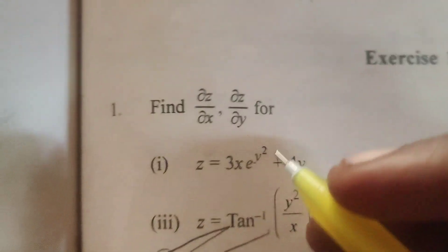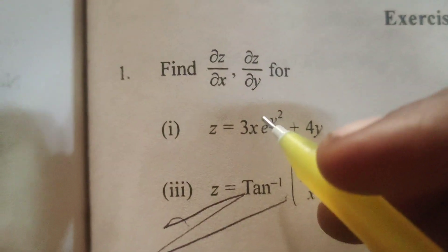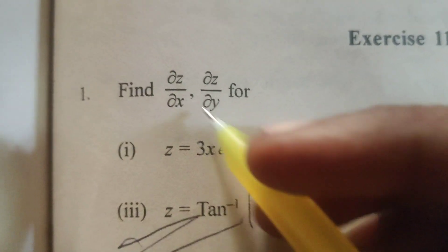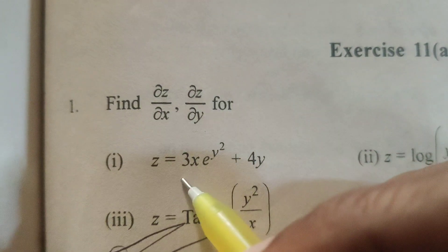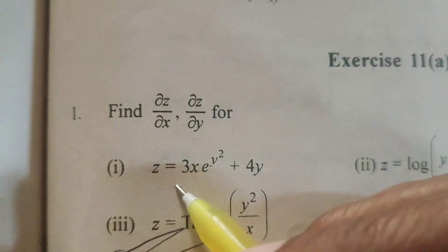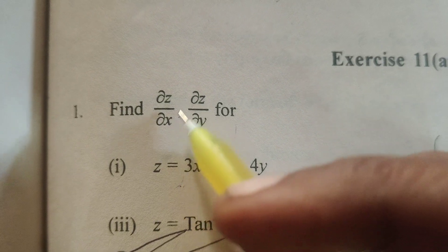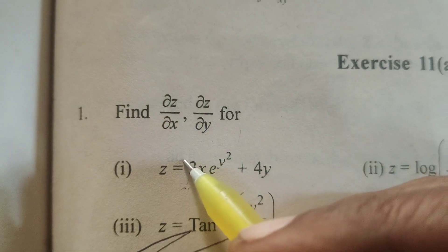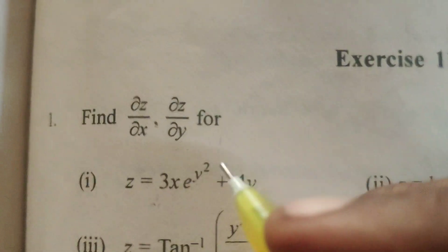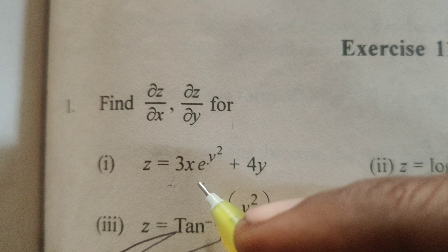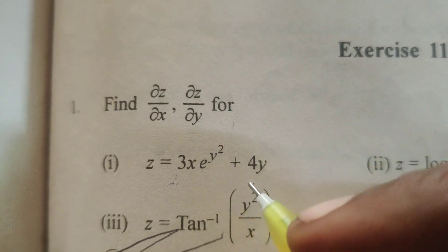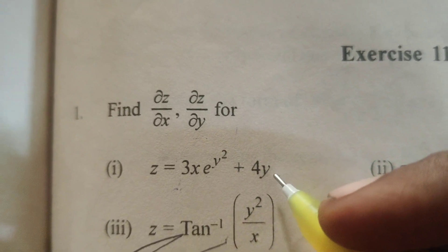Hi everyone, this is Dr. Aethi. Today we are going to explain this problem: differentiating partially with respect to x and with respect to y. Here, given z equals 3x e power y square plus 4y.